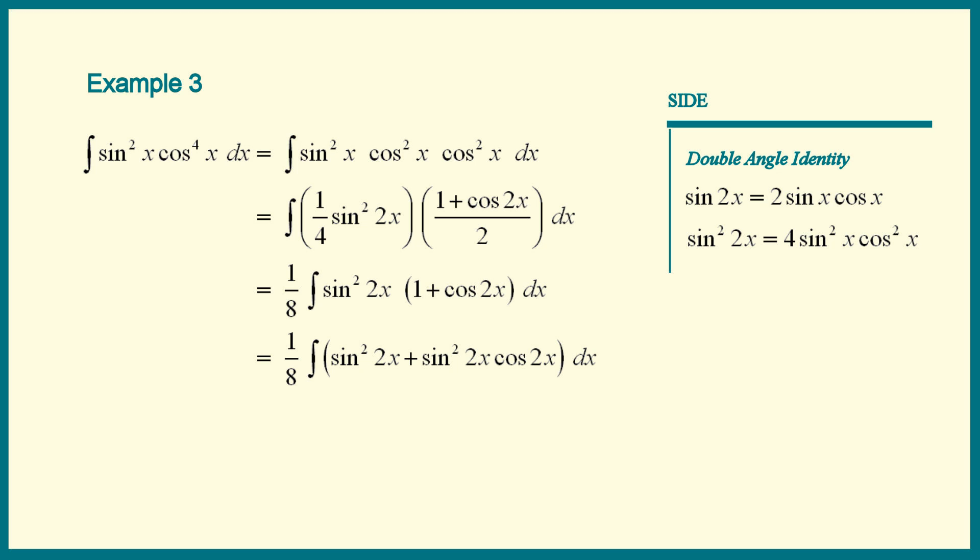Split that into two integrals. We have 1 8th times the integral of the sine squared plus the integral of the sine squared cosine. Let's name those 1 and 2 because we have to turn the page.